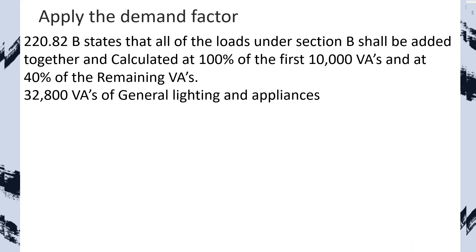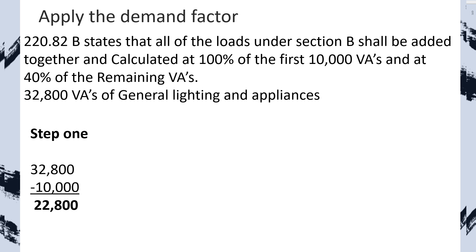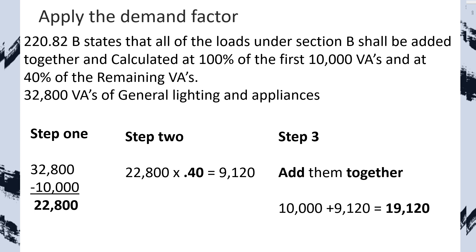Now that we've learned to take our three VAs per square foot and our 4,500 and then the nameplate of all appliances, let's learn how to apply the demand factor. It's super simple — total all that up and apply one general demand factor. Using an imaginary load of 30,208 VAs of general lighting and appliances: step one, take the first 10,000 at 100% and set it aside; take the remainder at 40%; then add back the 10,000, and we end up with 19,120 VAs. Then all we have to do is calculate the HVAC.